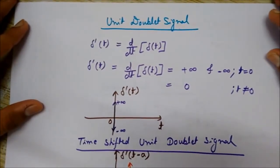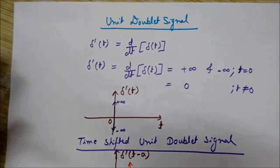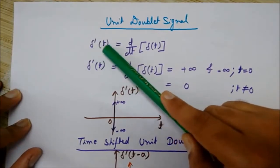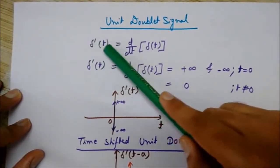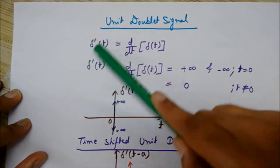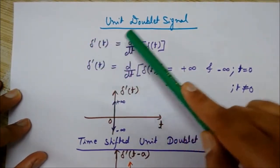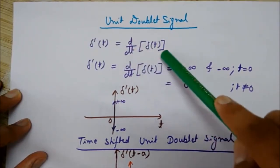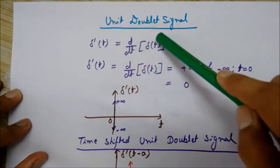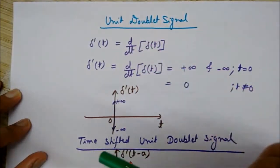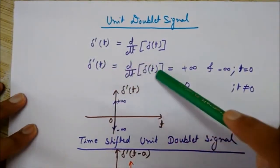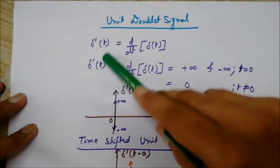It is denoted by delta dash t. Delta t is the symbol of impulse signal, and dash means differentiation. So delta dash t equals d/dt of delta t. The unit doublet signal can be obtained by differentiating the impulse signal with respect to time.